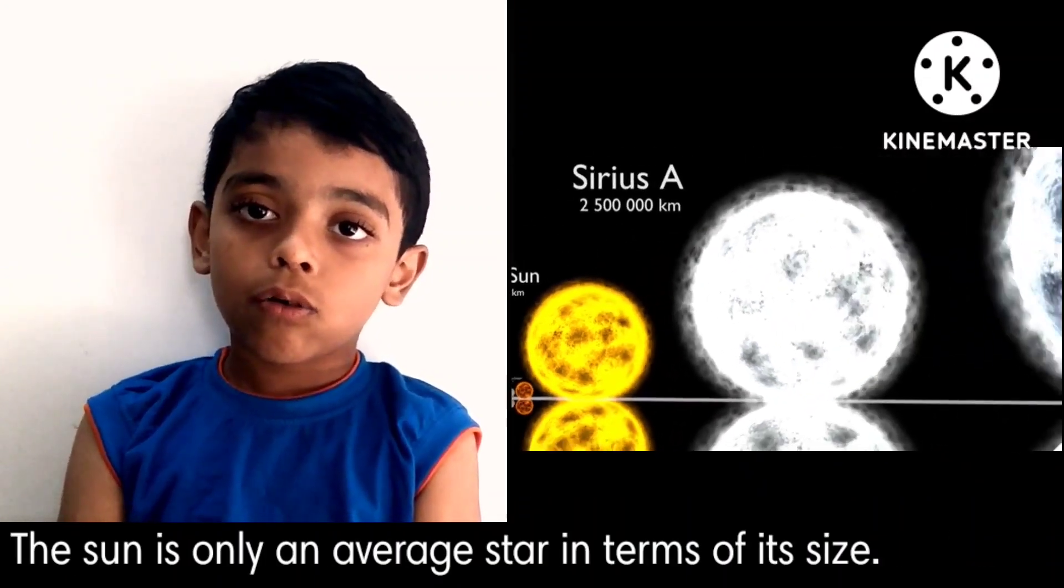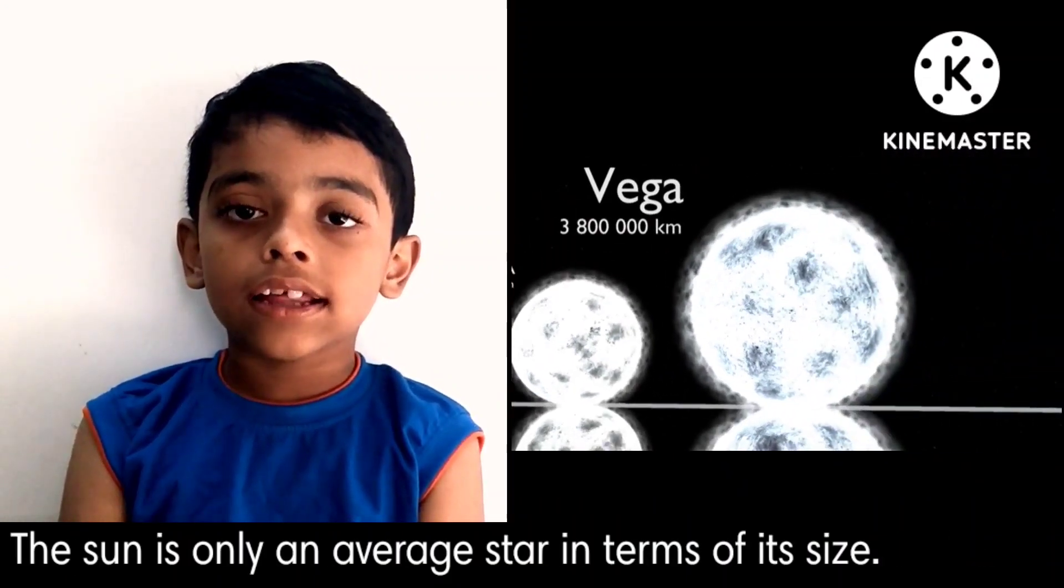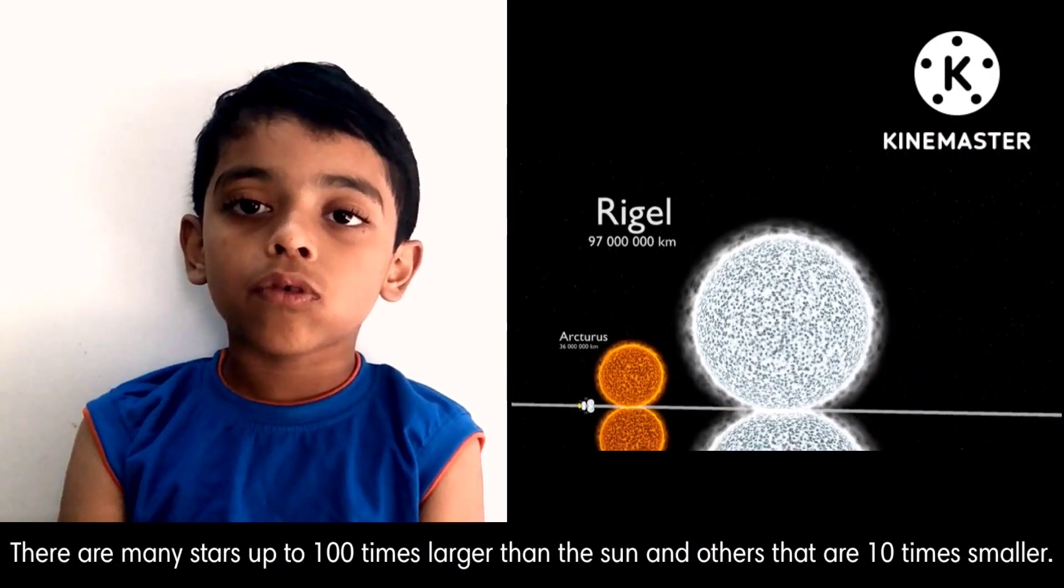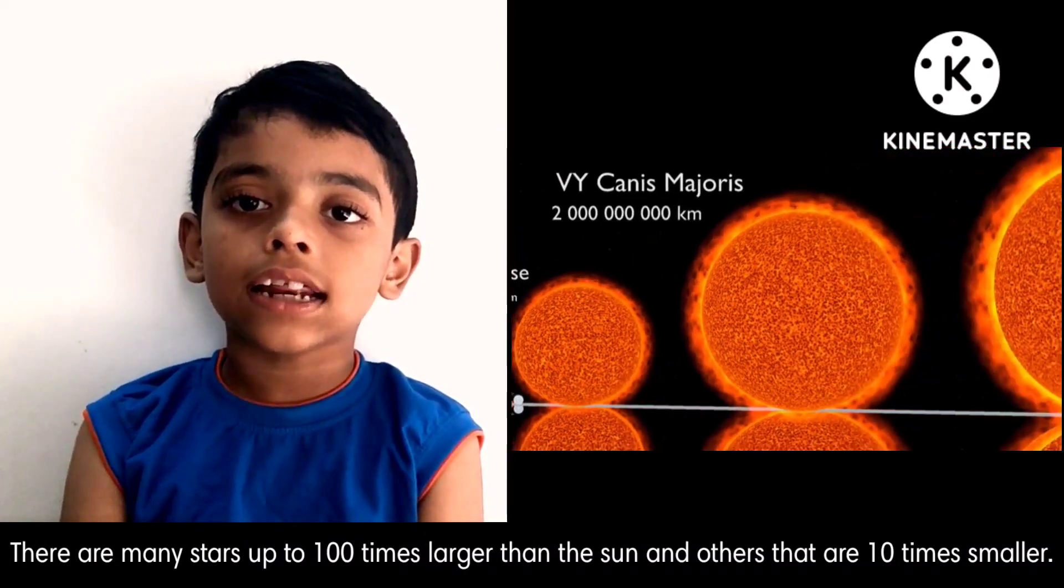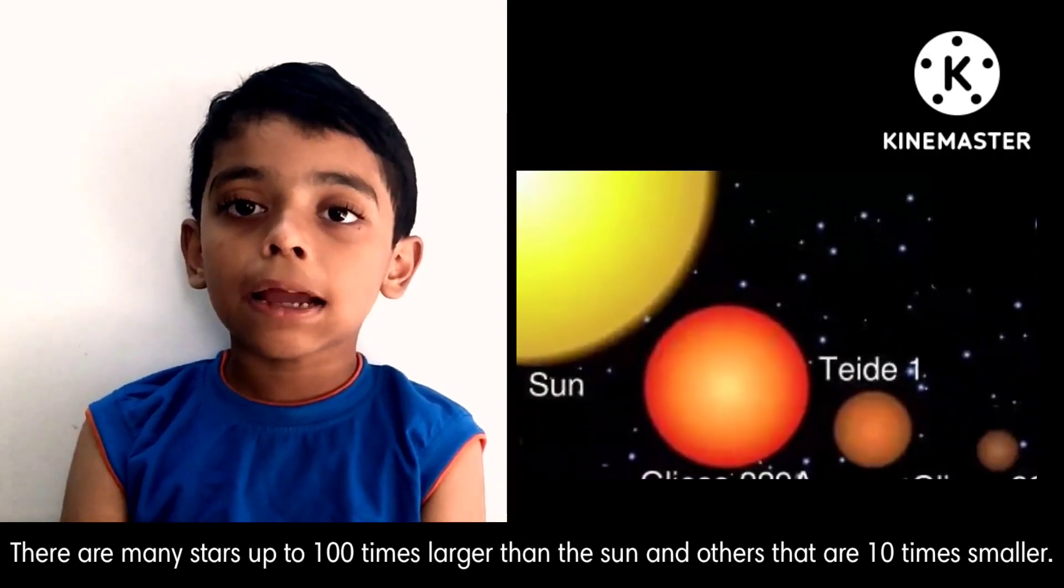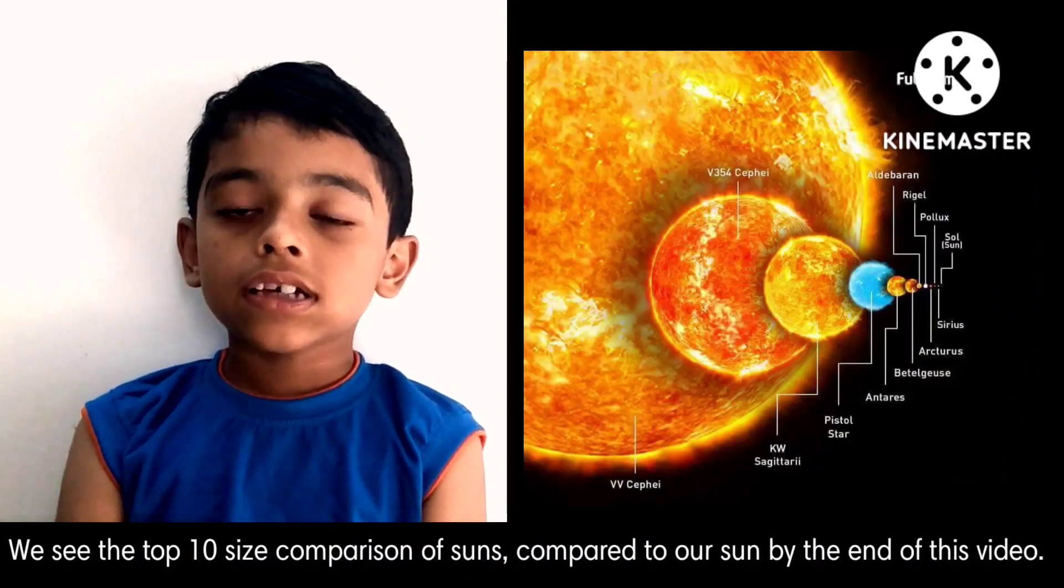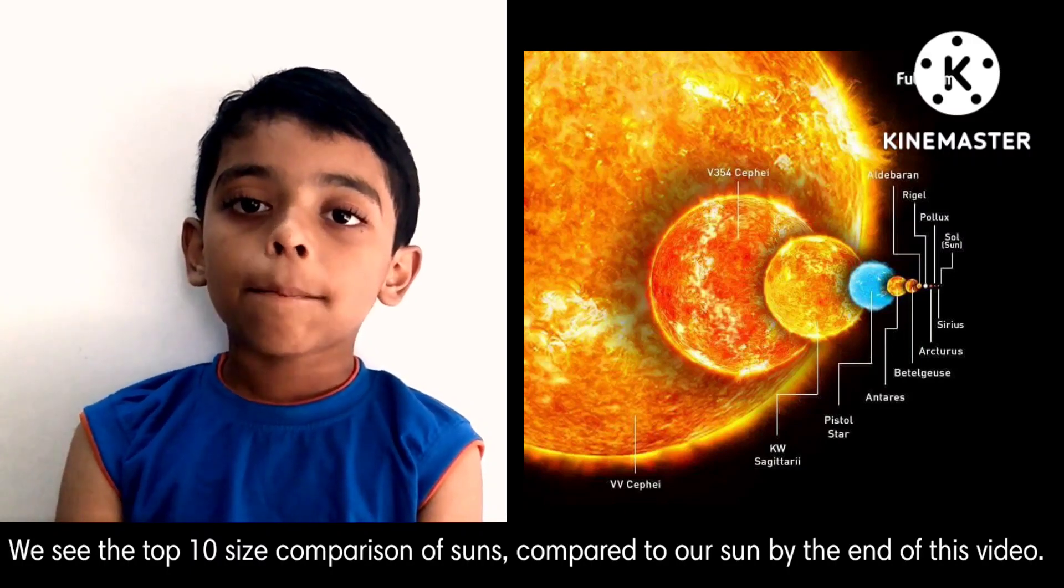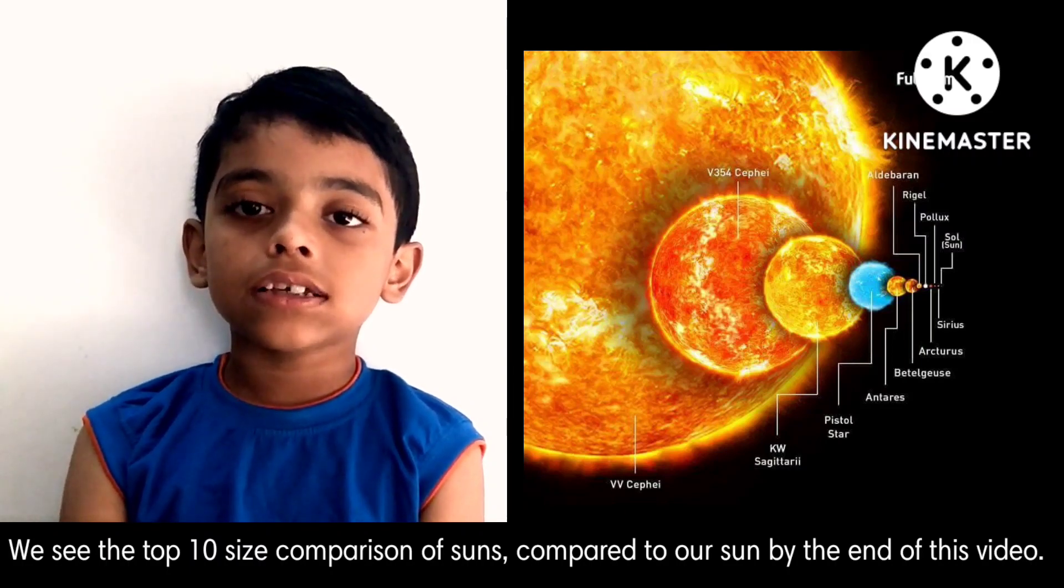The Sun is only an average star in terms of its size. There are many stars up to 100 times larger than the Sun and others that are 10 times smaller. We see the top 10 size comparison of suns compared to our Sun by end of this video.